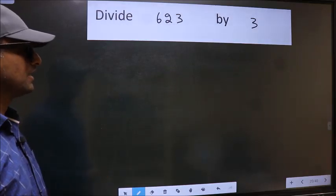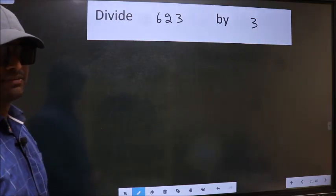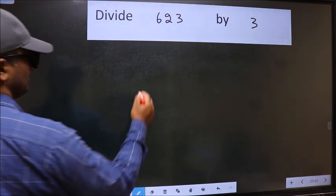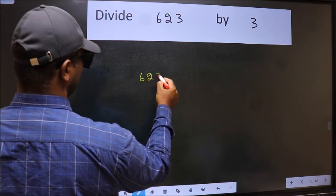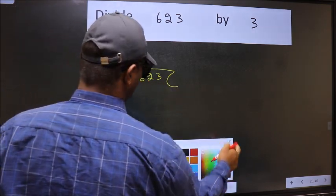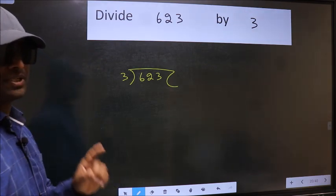Divide 623 by 3. To do this division, we should frame it in this way: 623 and 3 here. This is your step 1.